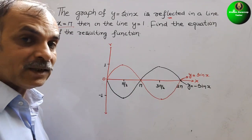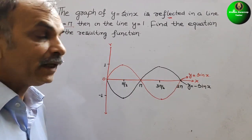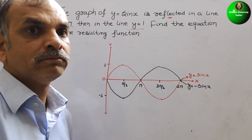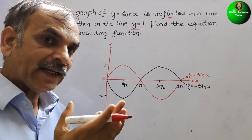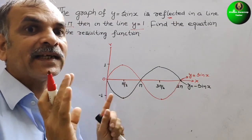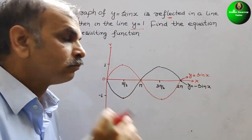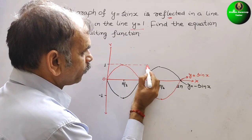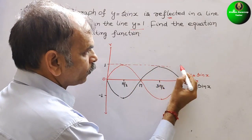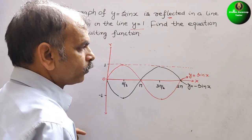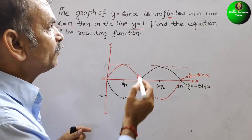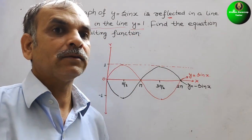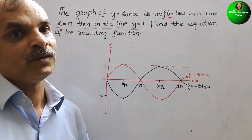Now, next what they have told? They have told y equals 1. Where is that line? Y equals 1 means the line is parallel to the x-axis at y equal to 1. So this is the line. Then in the line y equals 1, that means again we have to reflect it at y equals 1.